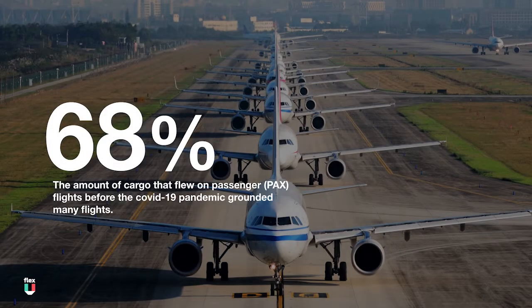Module 2: How is air cargo flying, and what are the constraints inside an airplane? In this module we would like to bring you inside an airplane to understand how cargo is loaded and the critical information any supply chain professional needs before requesting or booking an air shipment. First, let's break down some misconceptions.